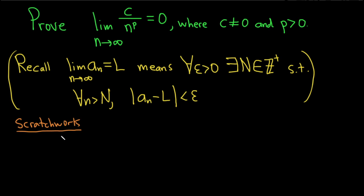We have epsilon greater than 0. We need to find capital N such that this is true. Our a sub n here is c over n to the p, so we need n so that c over n to the p minus l needs to be less than epsilon. Our l here is 0, so we need c over n to the p in absolute value to be less than epsilon.